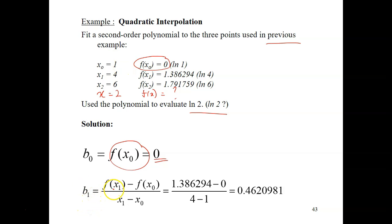And then b1 equals to fx1 minus fx0 divided by x1 minus x0. So, fx1 is here minus fx0, 0, divided by x1 minus x0. x1 minus x0, 4 minus 1. So, you will get this answer.